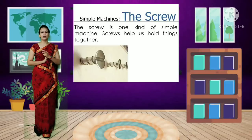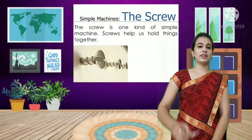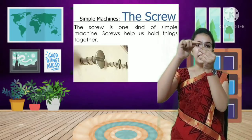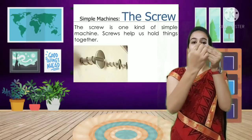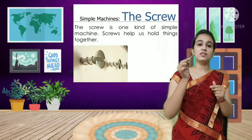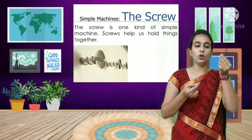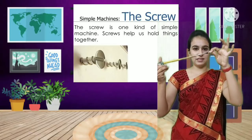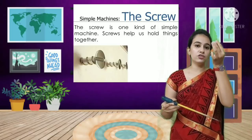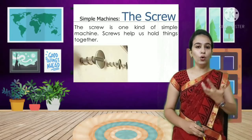The next simple machine is the screw. A nail with grooves in it is called a screw. You can see the rings around it - those are the grooves. We use screws in daily life to fix or hold things together. We can easily fix a screw with the help of a screwdriver. A nail with grooves in it is called a screw, and we use it to hold or fix many things.